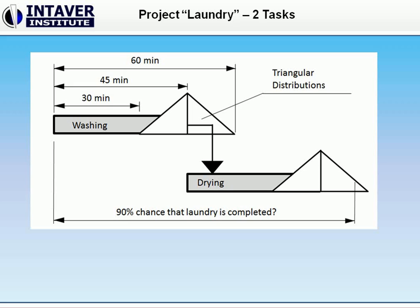Based on this parameter, the critical path method will calculate detailed project scheduling, including the start time, finish time, and all the activities of the project. The critical path method is a scheduling algorithm that calculates the start and finish time of each activity, as well as determining the critical path, floats, and other schedule parameters.